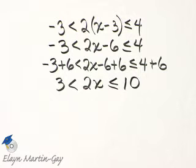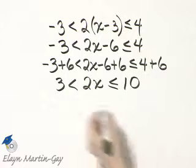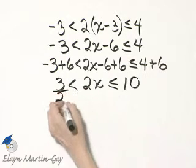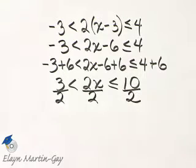How do I finish solving then? I divide all three parts by the coefficient of x, which is 2. So I will divide the left side by 2, the middle by 2, and the right side by 2.